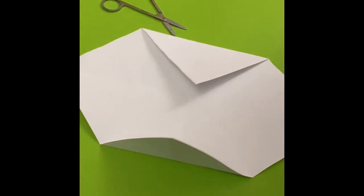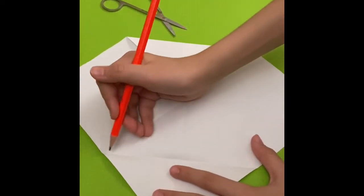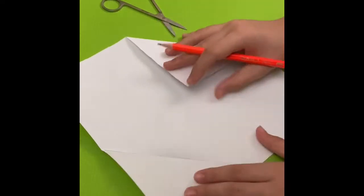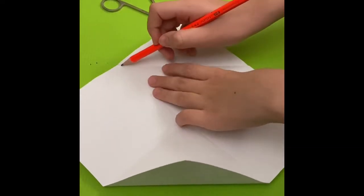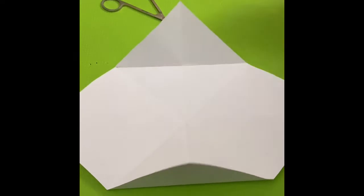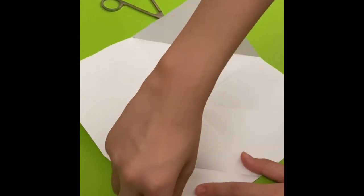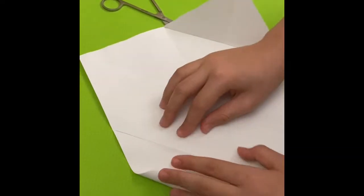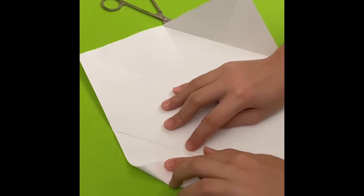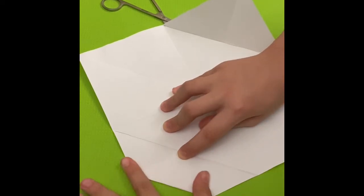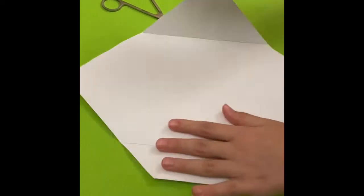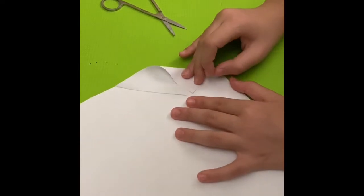Then you're gonna open it and you're gonna get a formed line when you fold it. And on this line you are going to fold the next step. You're gonna fold it on the line you just formed. Do this on the other side.